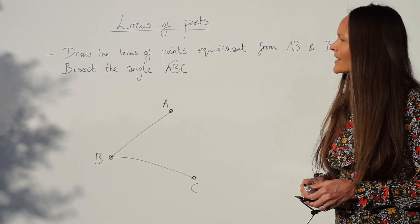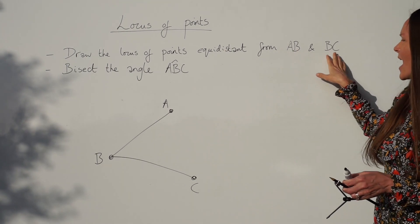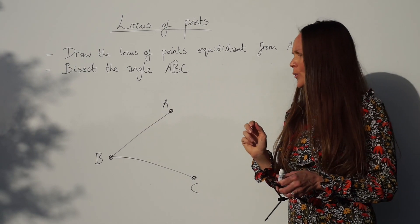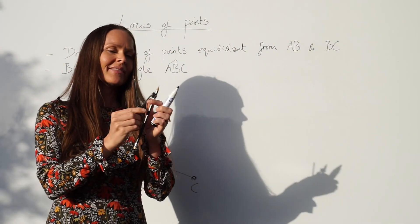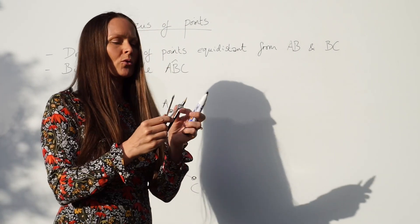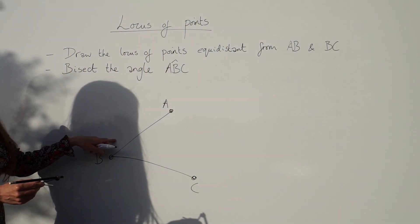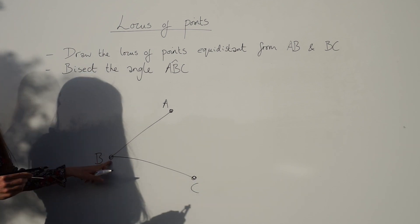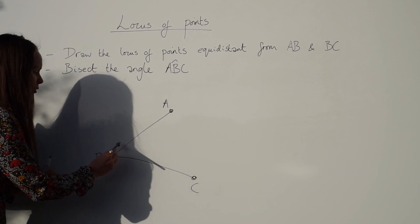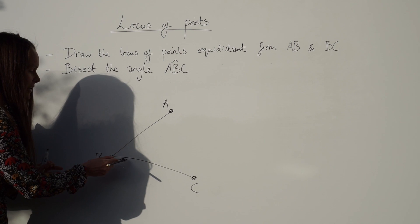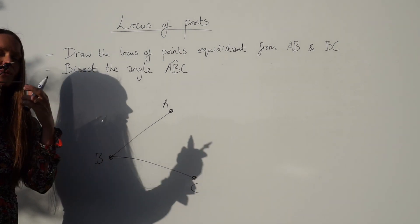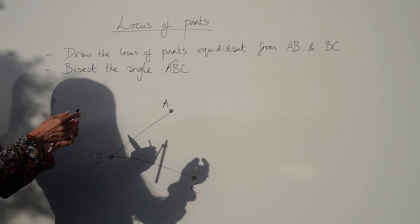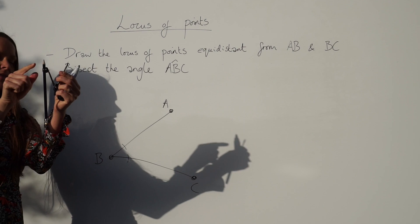Example three says: draw the locus of points equidistant from AB and BC. Another way of wording the same question is: bisect the angle ABC. Take your compass and pencil and make sure the distance is quite small — smaller than the length of the line. Place the compass point on point B and draw a small arc along one line and then along the other, making sure not to change the distance between the arcs.